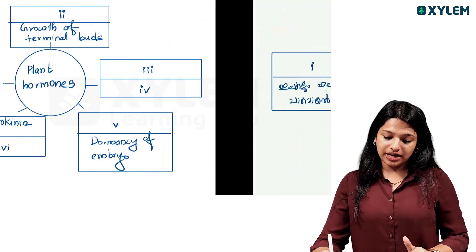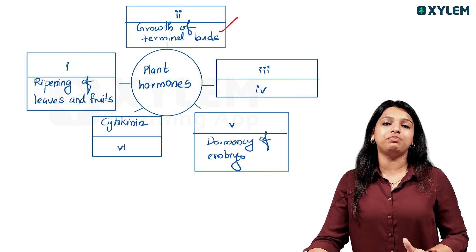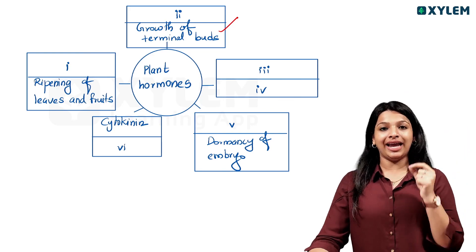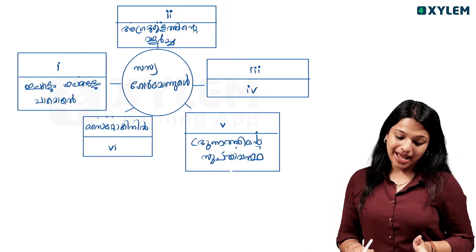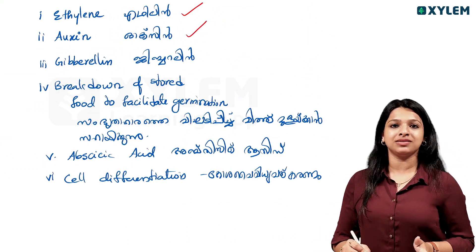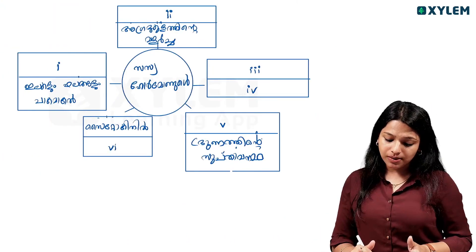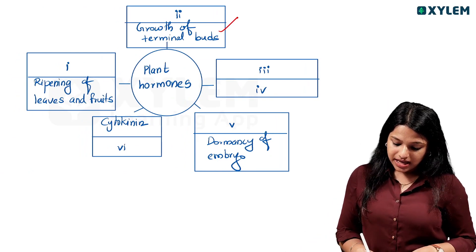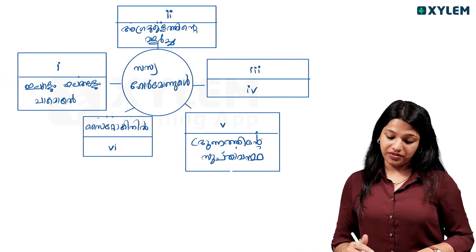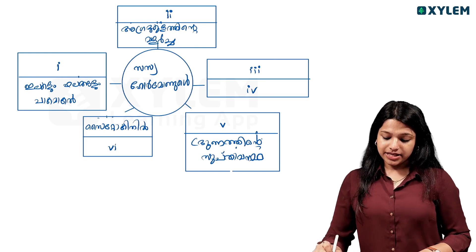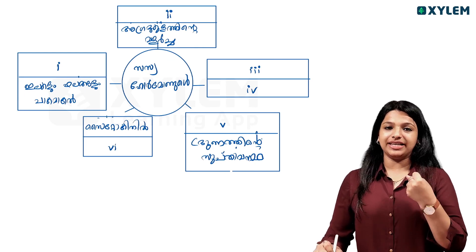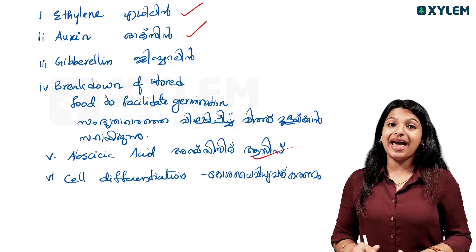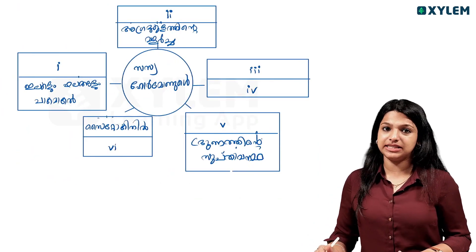The growth of terminal buds — that is the top, the apical dominance. The hormone going to be used for that is auxin. Now for points three and four, the dormancy of the embryo — that is dominated by abscisic acid.